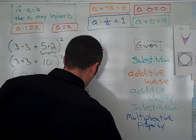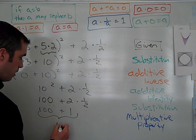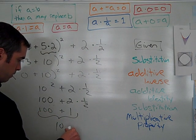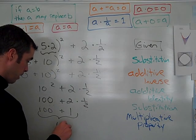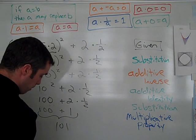Okay. And then lastly, 100 plus 1. So 100 plus 1 is 101. Oops. Spelled 101 wrong. And once again, as we look up here, that's the substitution property.